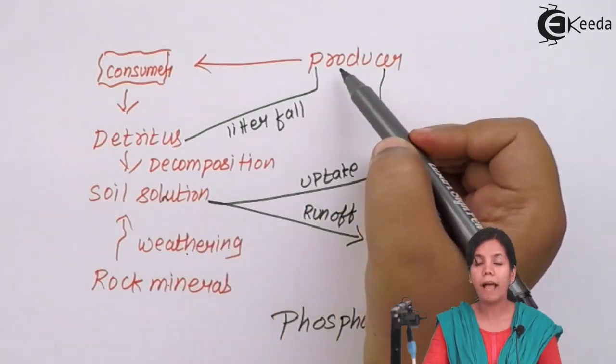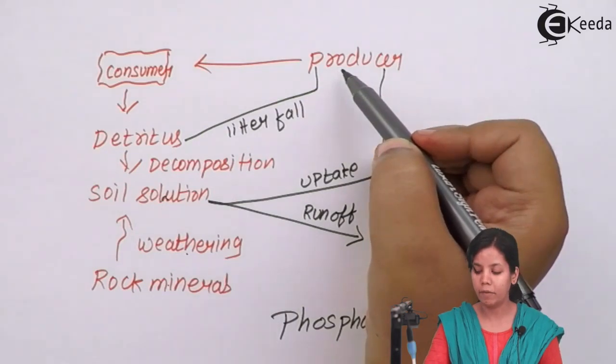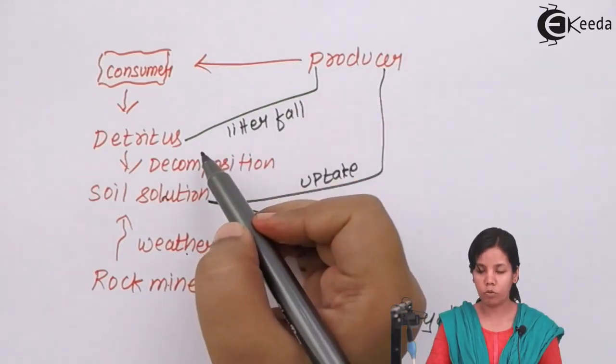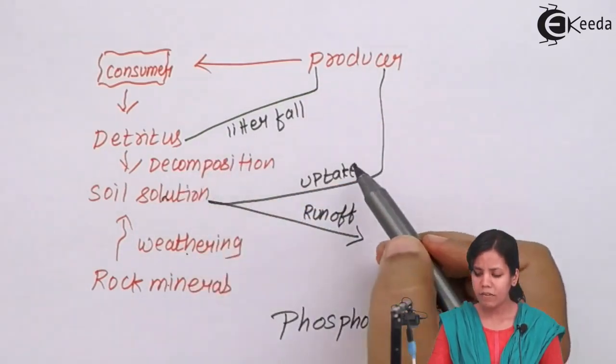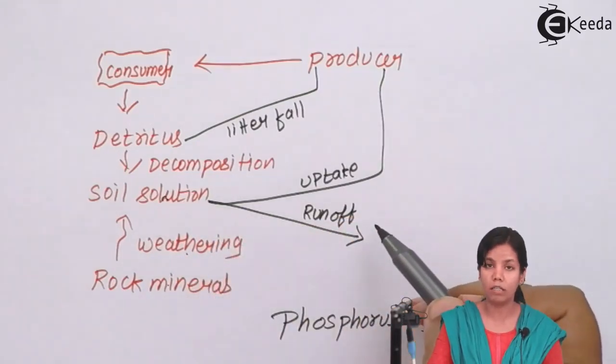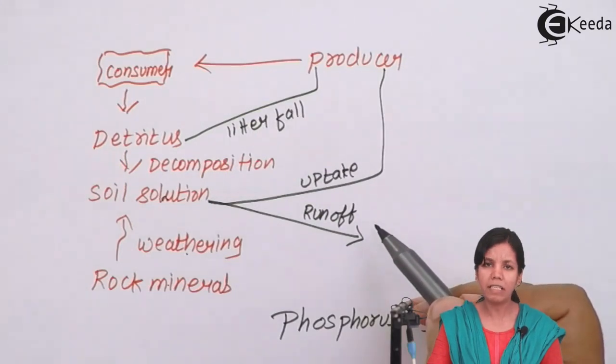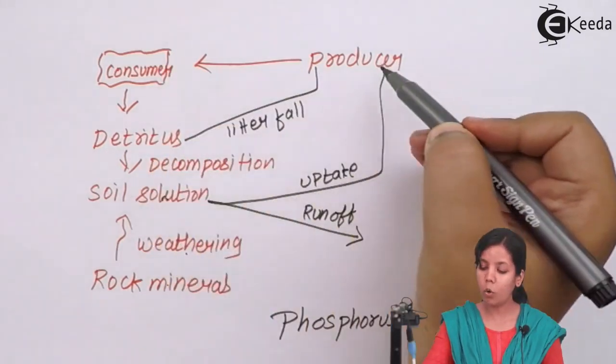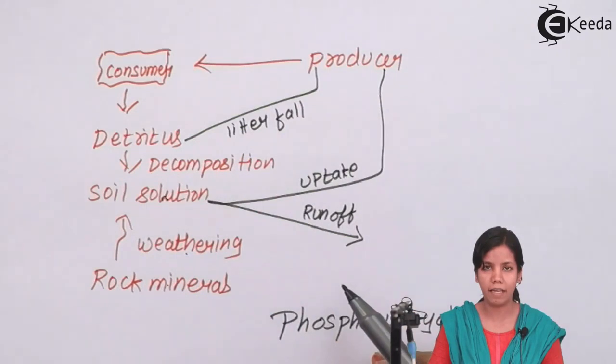Even producers like plants have huge amount of phosphorus in them which decompose and go back to soil to produce phosphorus. Even some amount of phosphorus from the soil runs off and goes back to other sources like water, nearby mountains, fields and crops. So this is the whole process how phosphorus cycle works.